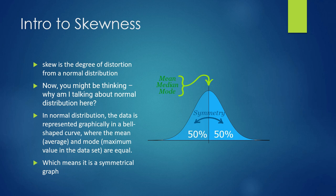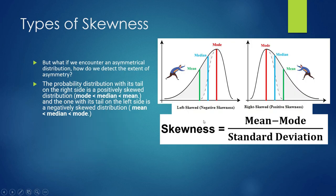In reality, distributions are not perfectly symmetric — they are either left skewed or right skewed. To remember: whichever side the slope is on, that's the skew direction. Left skewed means negative skewness; right skewed means positive skewness. This helps avoid confusion.